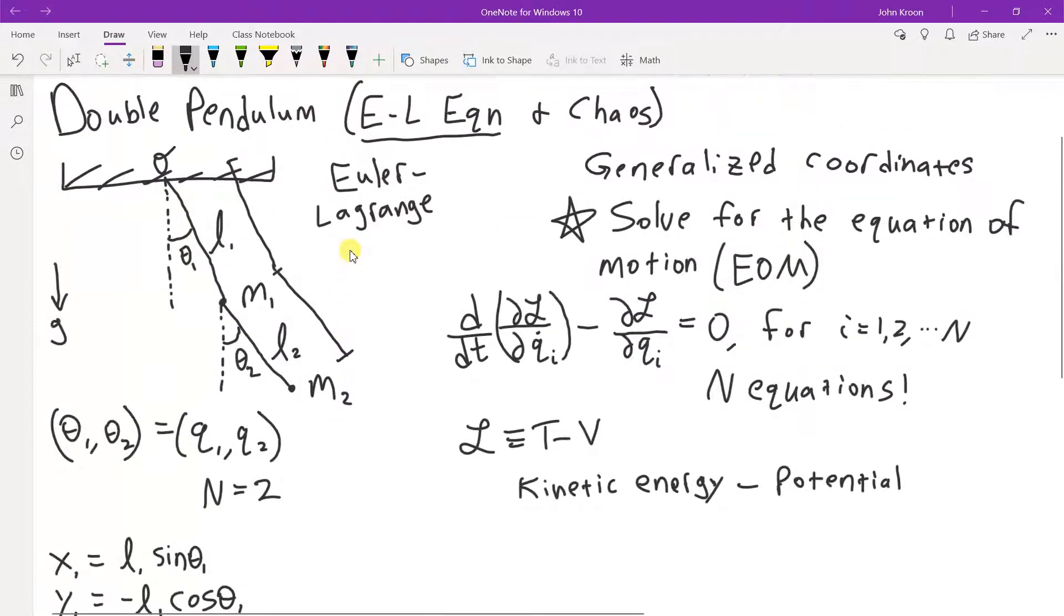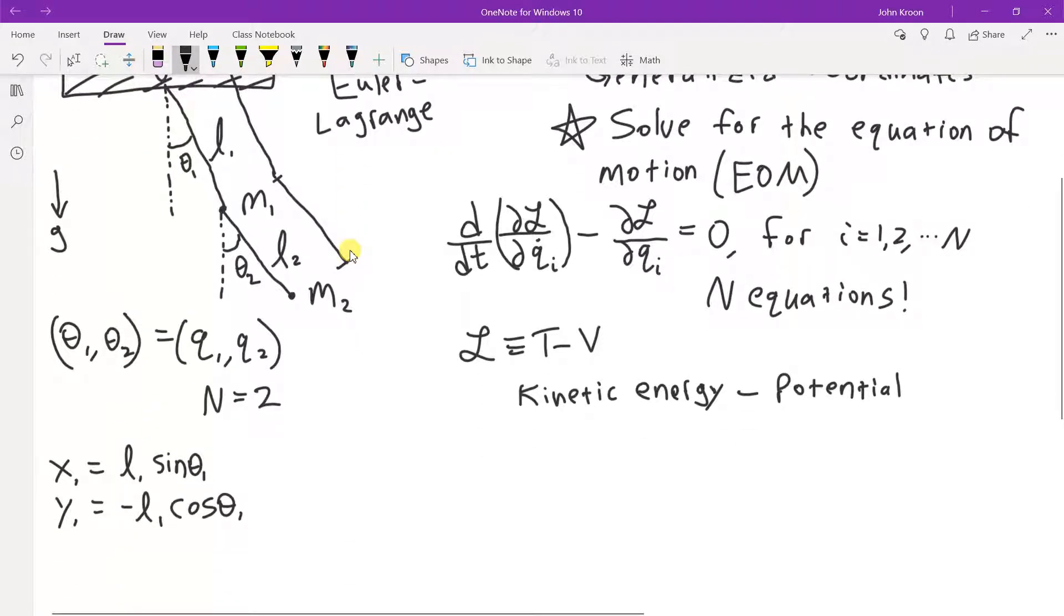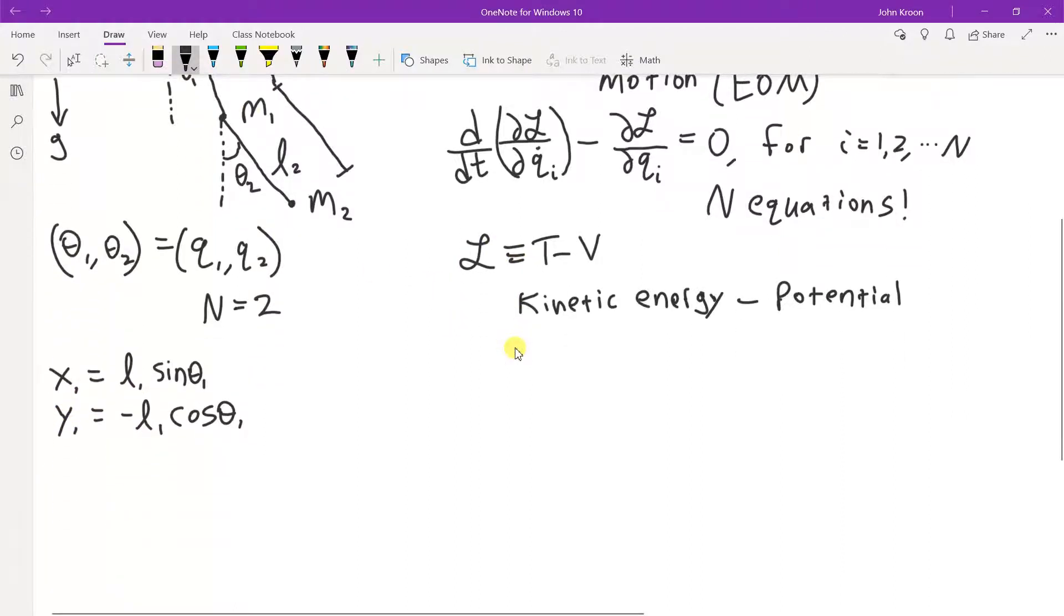Yeah, so let's have y be up. And so with these coordinates for the x and y location of just the first mass, the second mass has an x coordinate of l1 sin theta 1 plus l2 sin theta 2.